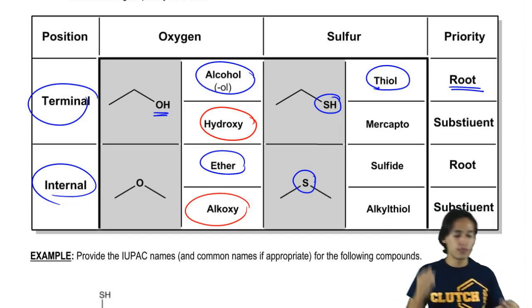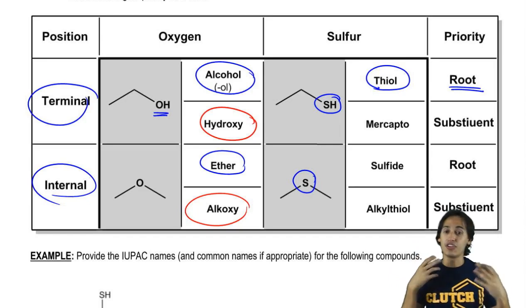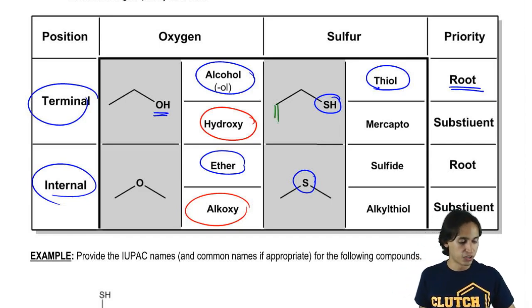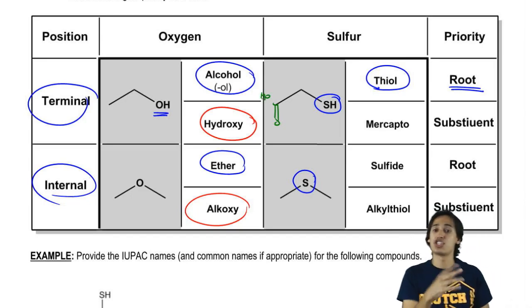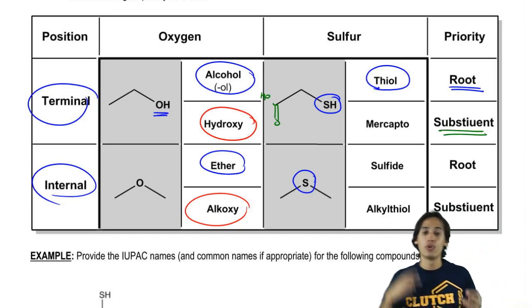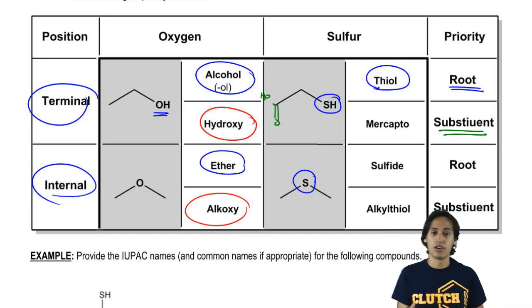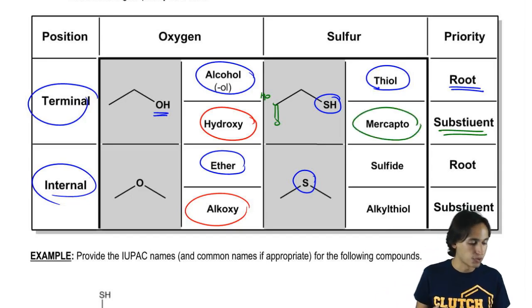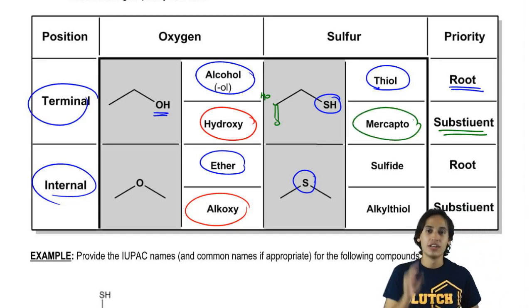Now how about if the sulfur is there but I have another high priority group present, for example like a carboxylic acid. Let's say I had a carboxylic acid, so my SH is not getting top priority. That means it's being named as a substituent. Well in that case, instead of calling it thiol, we're going to name it mercapto. Now I know that sounds really weird, that's a word that comes from the Latin and they just stuck with it. Mercapto means sulfur in Latin.